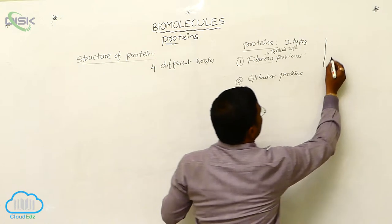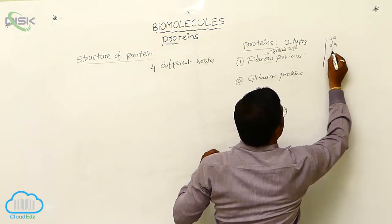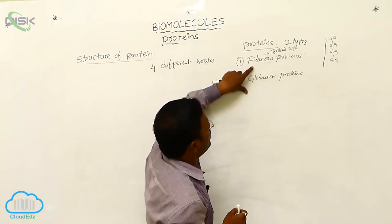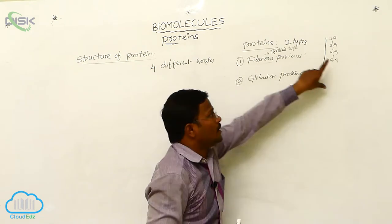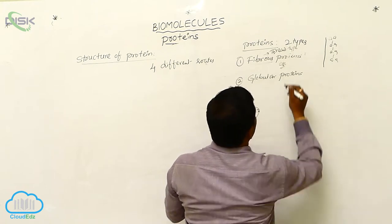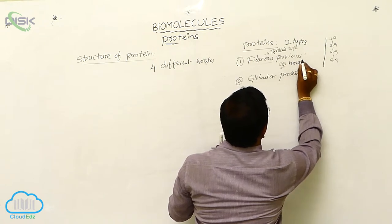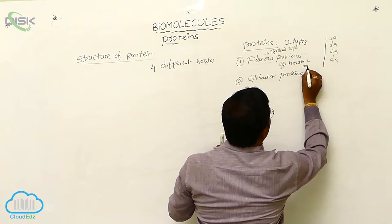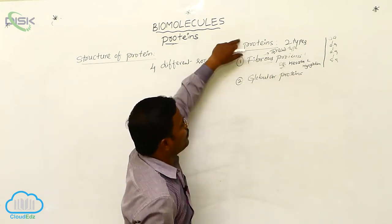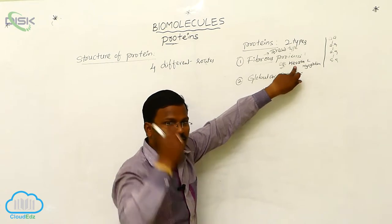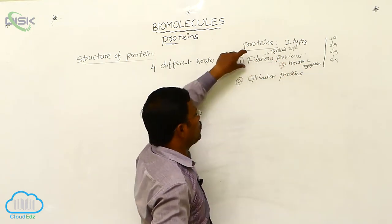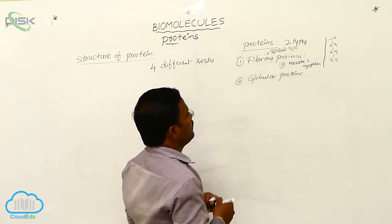One amino acid is connected to another amino acid, connected to another, and so on — like a thread. Such types of proteins are called fibrous proteins. Examples of fibrous proteins are keratin, found in hair and cotton, and myoglobin, present in muscles.